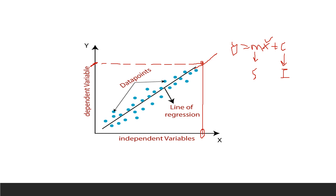For example, in the salary example, the experience for every employee will be different — the first employee might have five years, the next three years — so the value of x is fixed per employee. But the values of m and c can be changed, and based on these values different lines can be drawn through the set of data points. We will use the line that gives us the minimum error between the predicted value and the actual value of the data points.